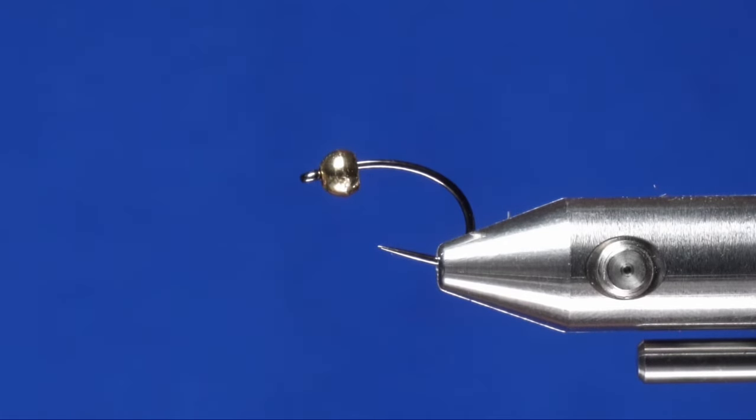Welcome back to an edition of Precision Fly of the Week. Today we're going to tie the Holy Grail Caddis. The hook I got in the vise is a Hanek 310 with a 1/8 tungsten bead.